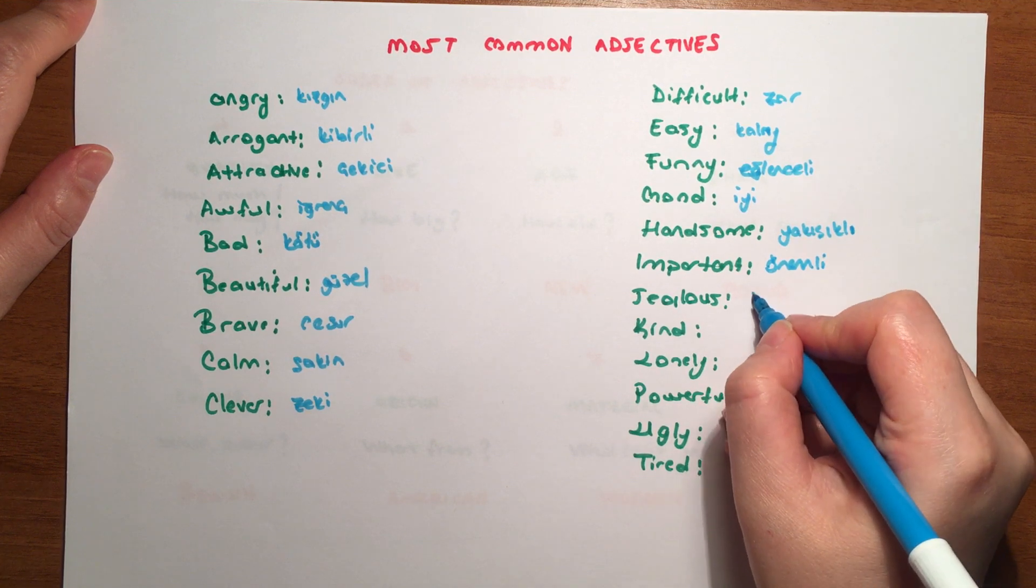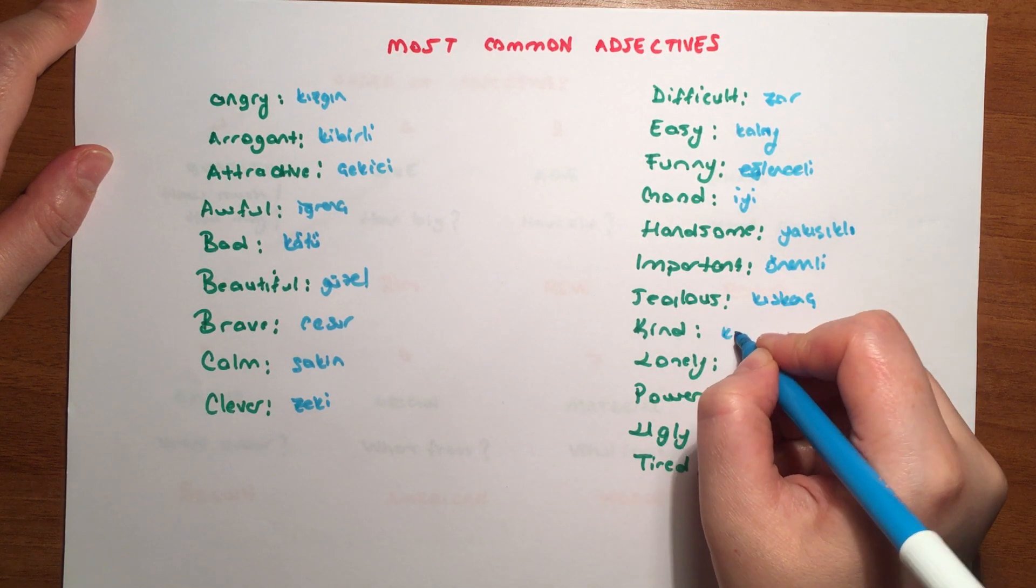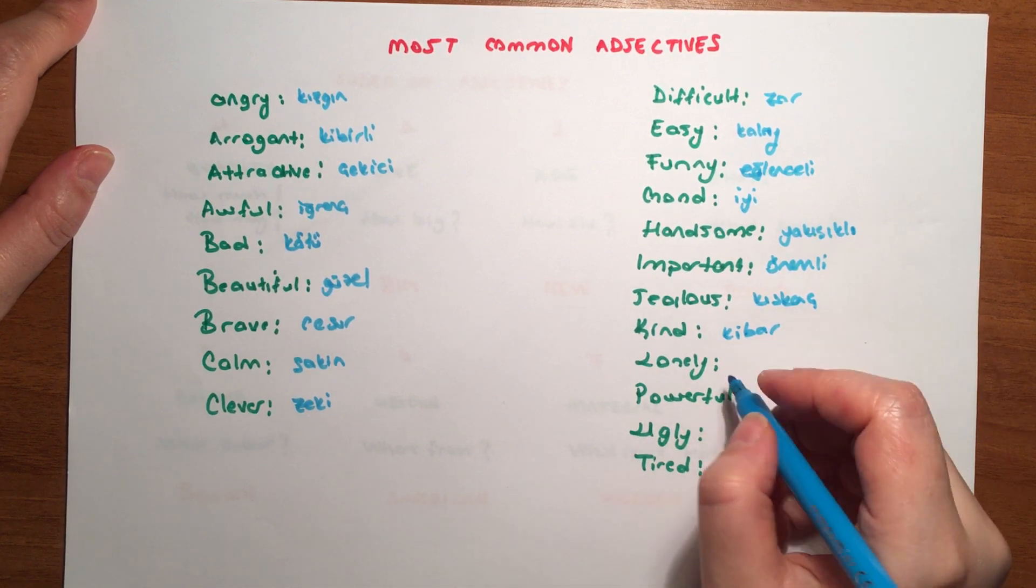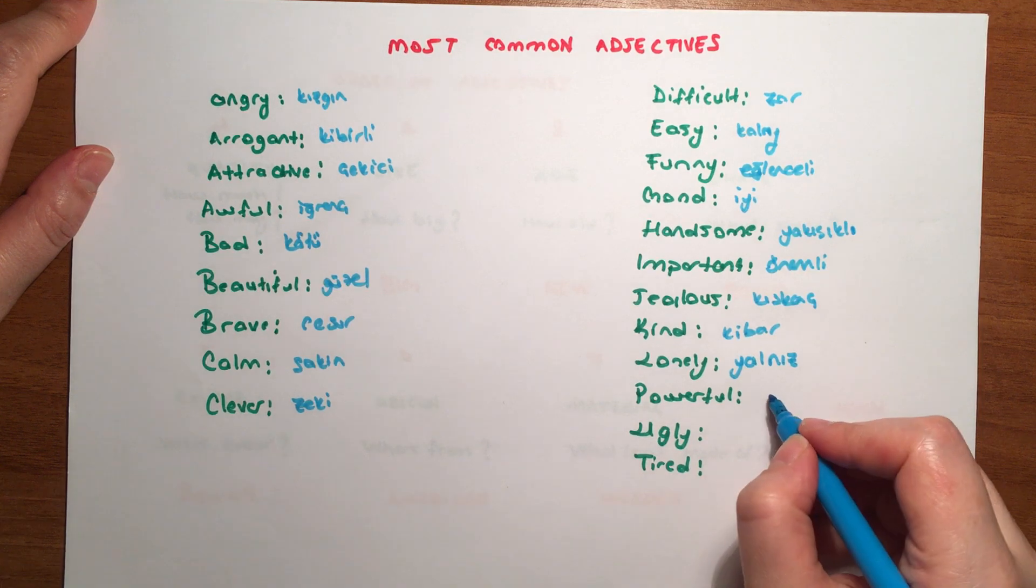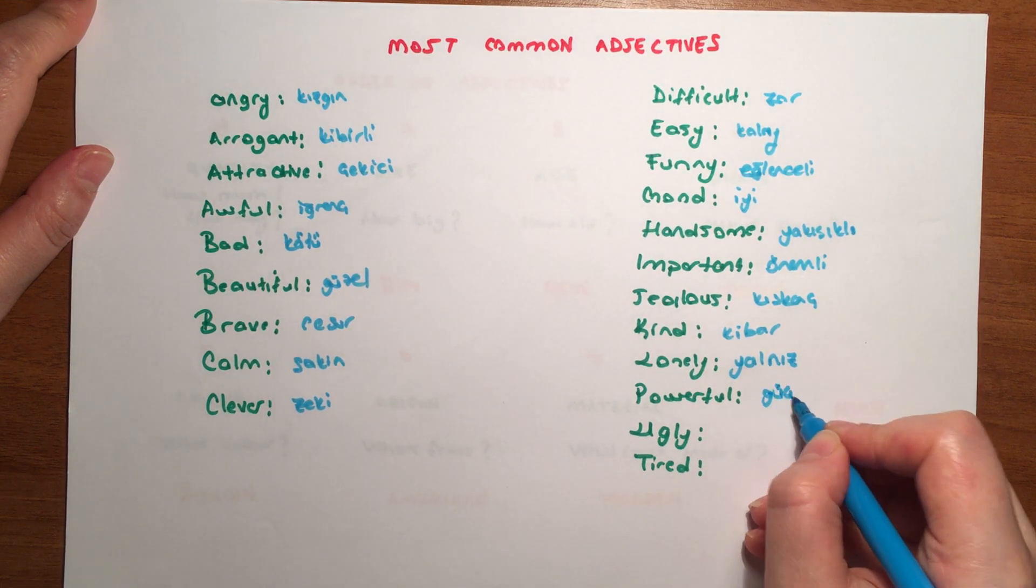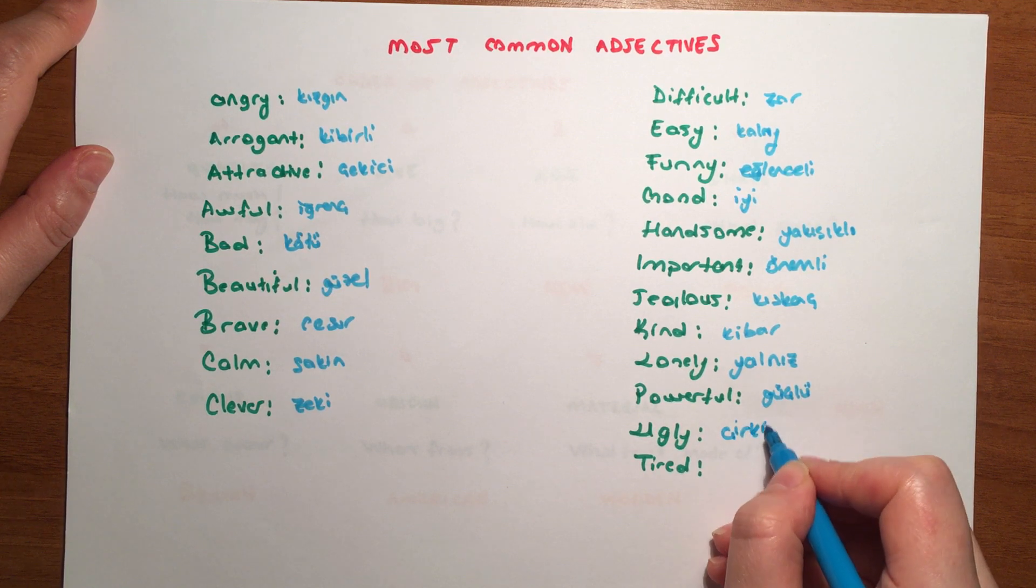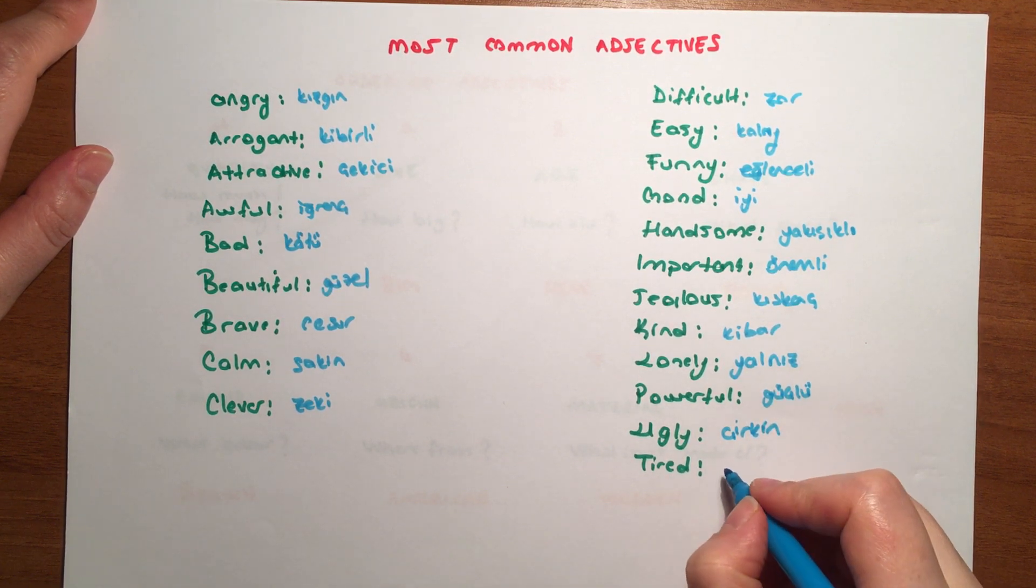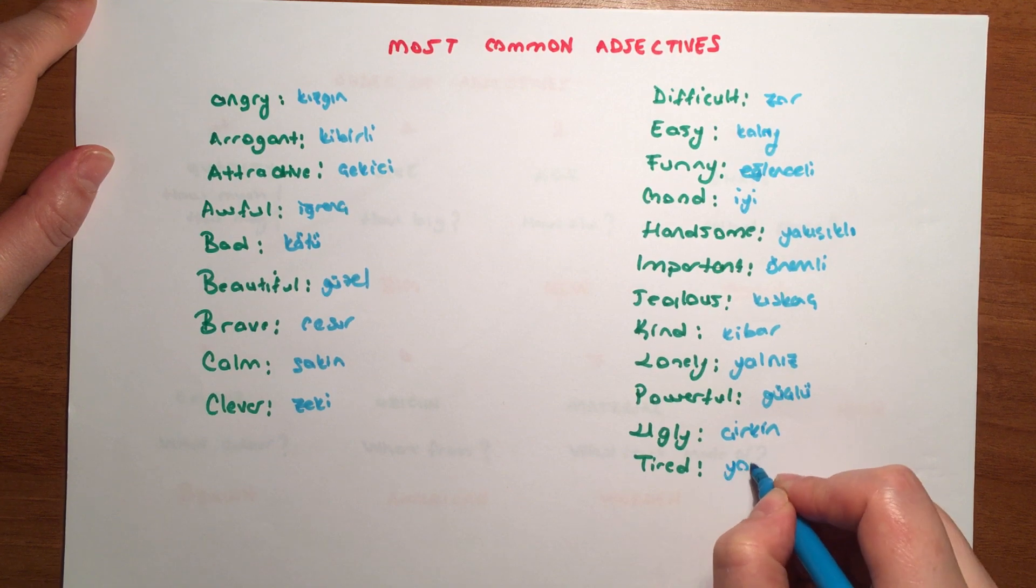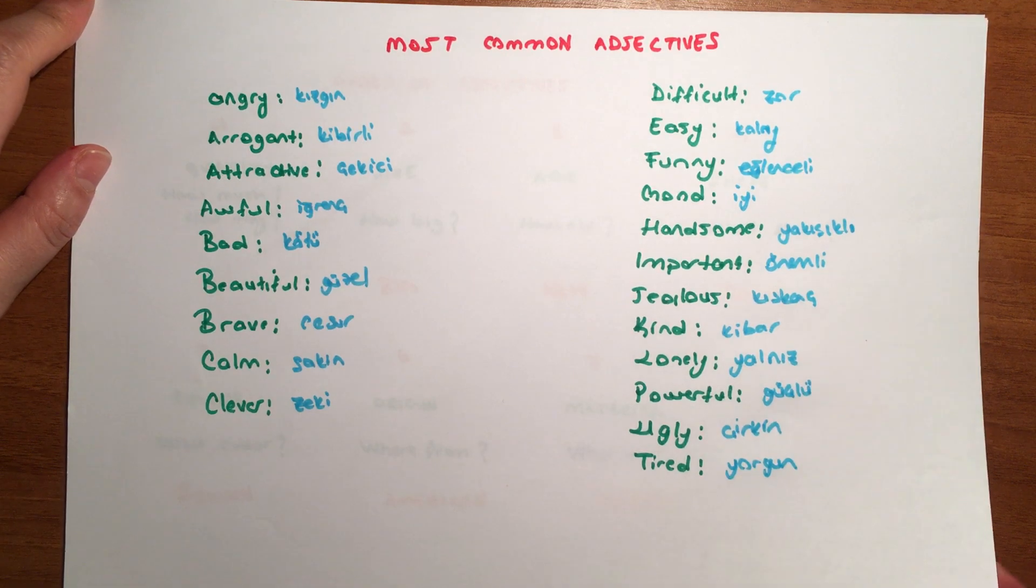Calm means calm. Clever means smart, intelligent. Difficult means difficult. Easy means easy. These are also opposites, as you can see. Funny means fun, entertaining. We can say the opposite is boring. Good means good. What was its opposite? Bad, we wrote that here. Handsome means handsome.